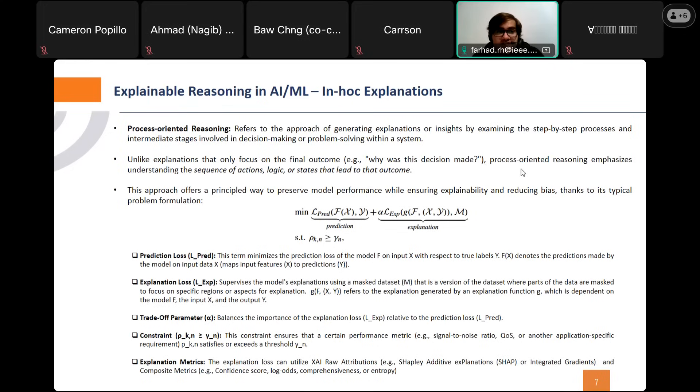Here you can see the general or typical problem formulation about the in-hoc explanation or process-oriented reasoning. We have two losses, the prediction and explanation losses, aim to minimize the total loss where usually the explanation, the role of explanation loss is a kind of supervision or supervising and or guidance the learning process.